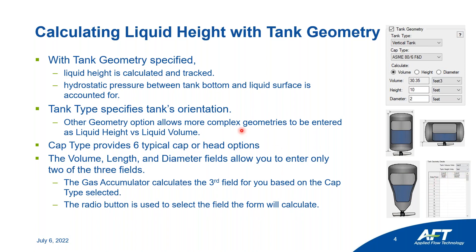The cap type dropdown provides six typical cap or head options — for example, ASME 80/6 flanged and dished, shown here. Below that you can see the volume, length, and diameter fields. They allow you to enter two out of three of the fields and we will calculate the third for you. So if you want us to calculate volume, you select the volume radio button, enter your height and diameter, and for that given cap type we will give you the volume that your gas accumulator tank will be.